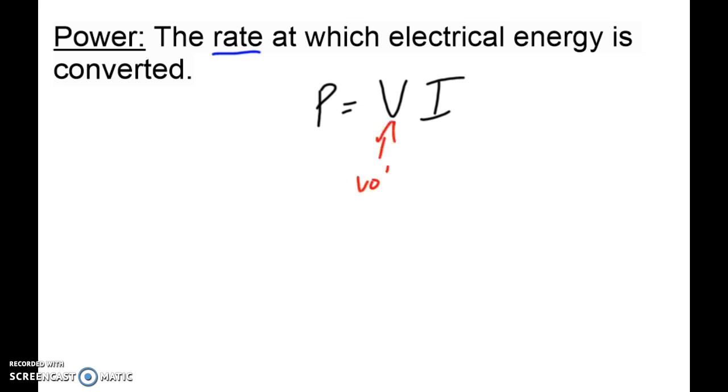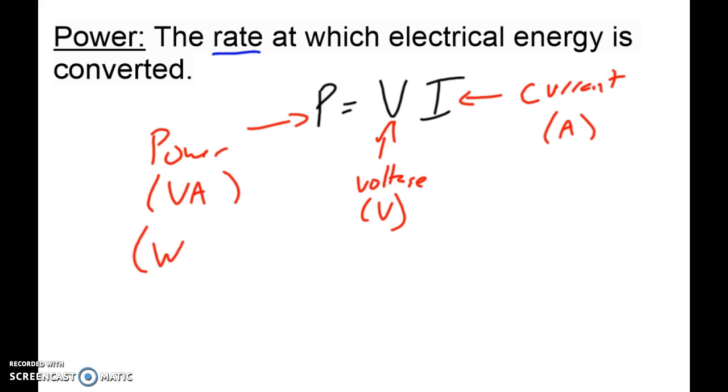So voltage in this case is measured in Vs. Current here is measured in amps. And power here is measured in volt amps. But we don't think of it as being volt amps. We think of it as being a W. So for watts.